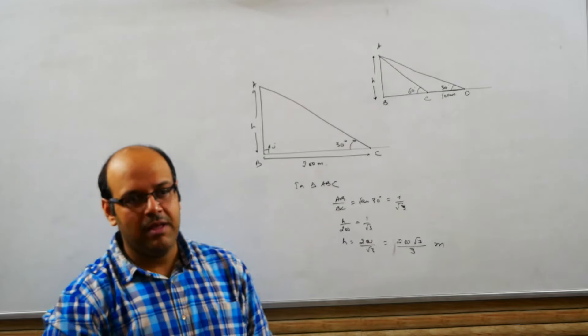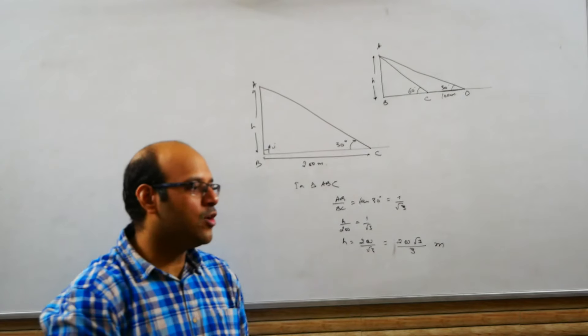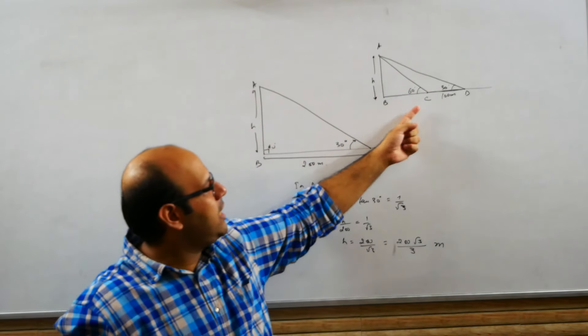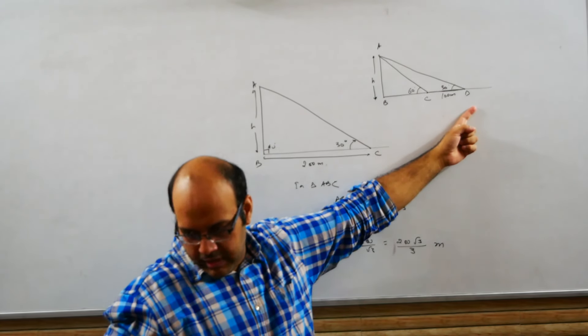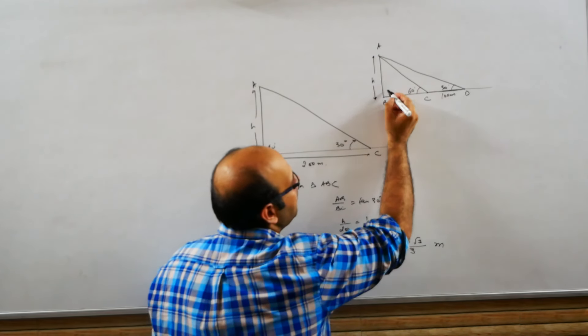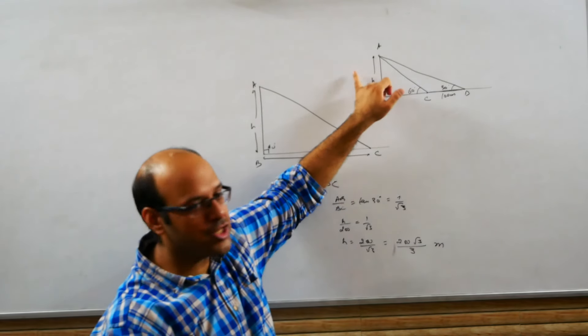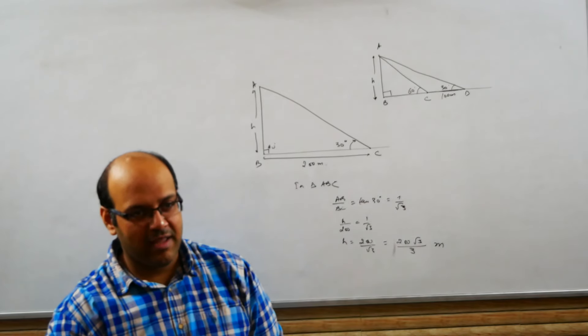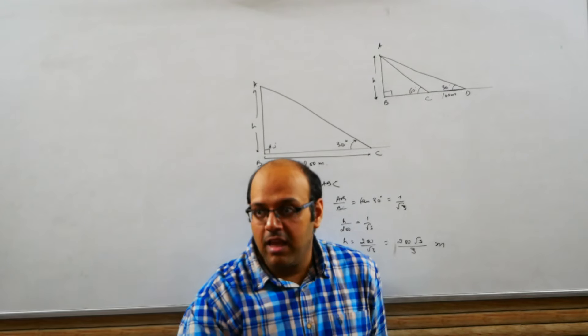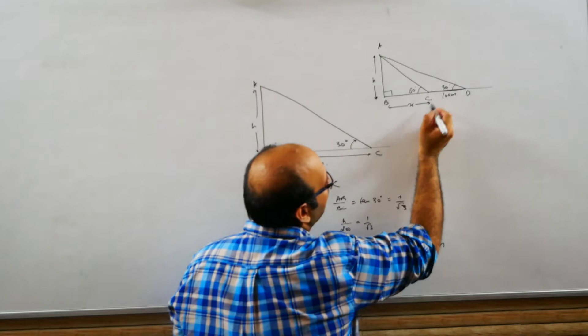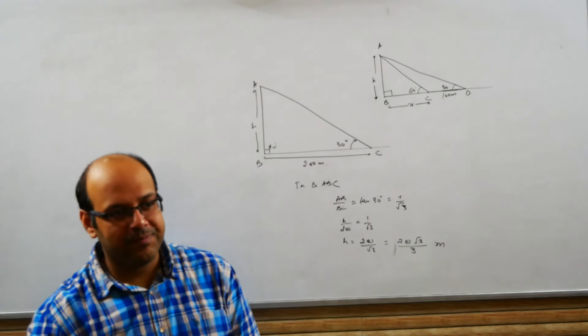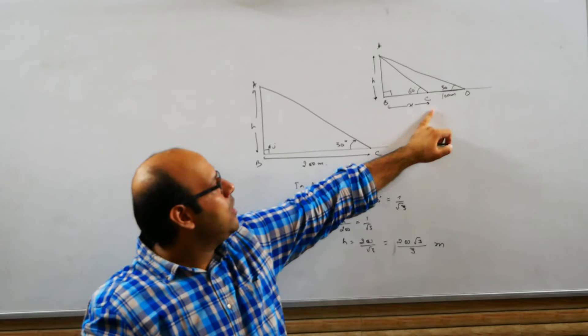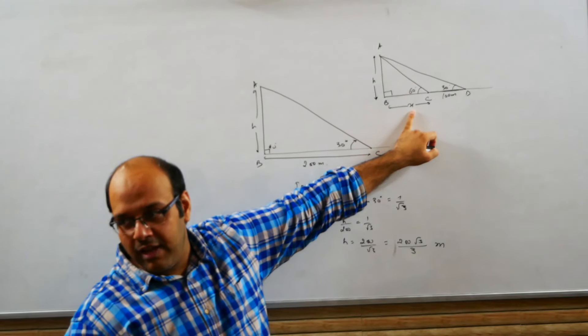I have to find the height of the tower. BC we don't know. BC we don't know. Now please understand, whichever trigonometric ratio you use, that has to be in a right angle triangle. We have two right angle triangles. First right angle triangle is ABC. Now whichever trigonometric ratio you use, it will have H and X. So first H and X will be connected, then that X has to be eliminated.